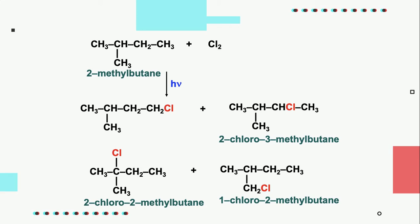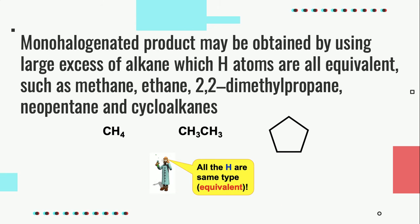The monochlorination of 2-methylbutane produces 4 different forms of products. A monohalogenated product may be obtained by using a large excess of alkane where hydrogen atoms are all equivalent, meaning they have the same class of carbon, such as methane, ethane, 2,2-dimethylpropane, neopentane, and cycloalkanes.